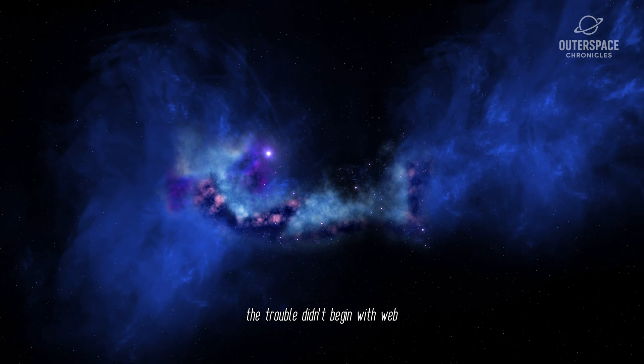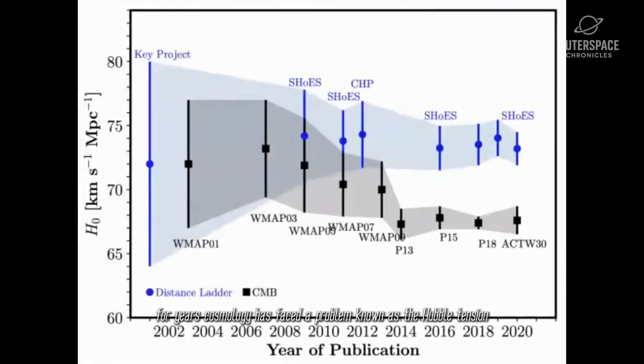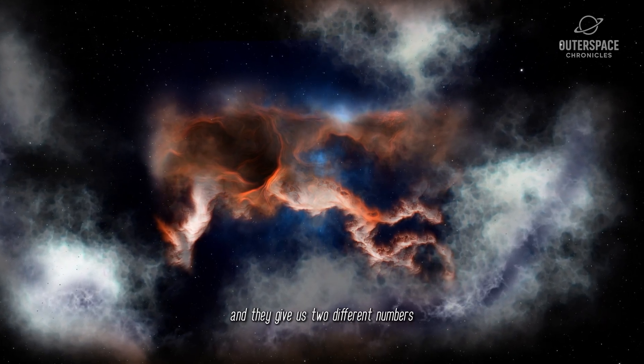The trouble didn't begin with Webb. For years, cosmology has faced a problem known as the Hubble Tension. To basically sum it up, we have two main ways of measuring the universe's expansion rate, and they give us two different numbers.